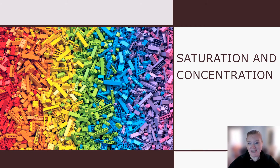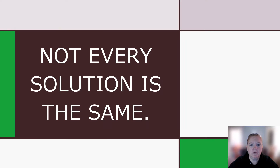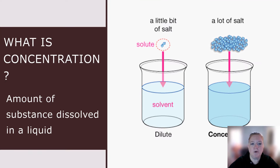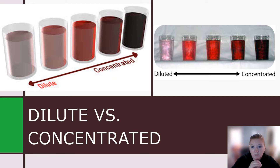Next topic: saturation and concentration. Remember, solutions are homogeneous — we have a solute dissolved in a solvent to make a solution. The solute can be a solid, liquid, or gas, and most of the time we're talking about a liquid solvent. Concentration is the amount of a substance dissolved in a liquid. If it's a little bit, we call it dilute; if it's a lot, we call it concentrated.